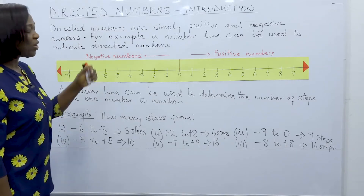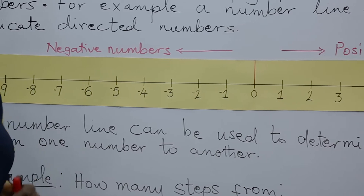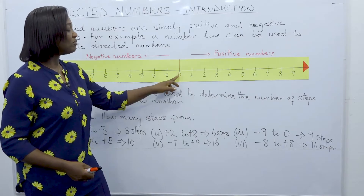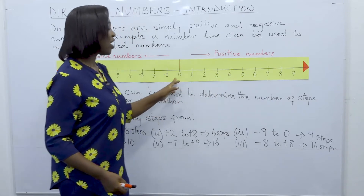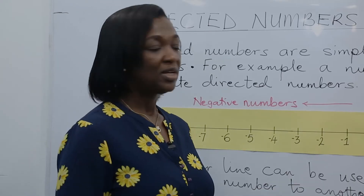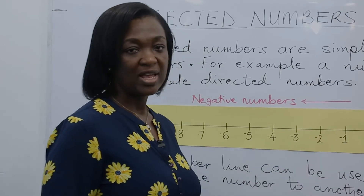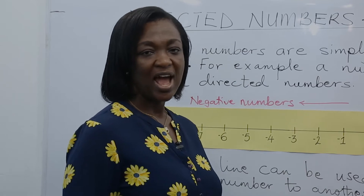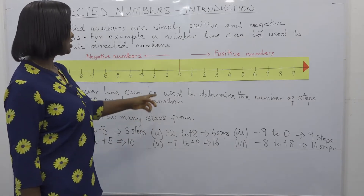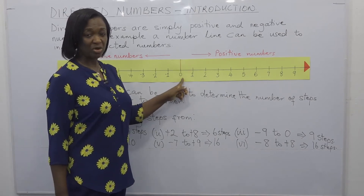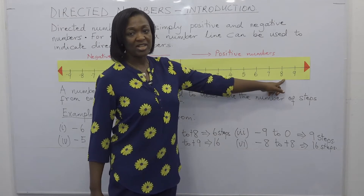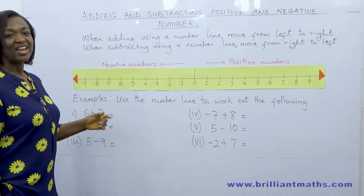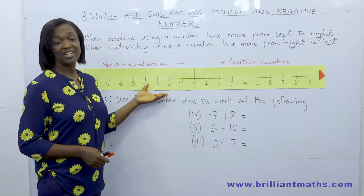If the temperature in the room was minus one degree Celsius and it increases by eight degrees — from minus one to zero is one step, and from zero to eight is eight steps. So eight plus one gives us nine. If the temperature on the playground in the morning was minus one degree Celsius and by midday it is eight degrees Celsius, by how many degrees has the temperature increased? From minus one to zero is one degree, and from zero to eight is eight degrees, so the temperature would have increased by nine — that is one plus eight.